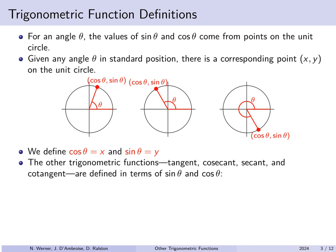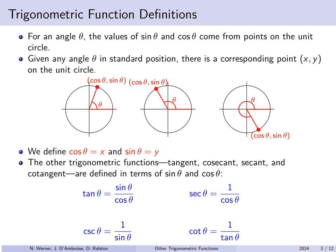Now the other trigonometric functions — tan, cosecant, secant, and cotangent — are defined as they have always been in terms of sine and cosine. So the tangent of theta is sine over cosine, the cosecant is 1 over sine, the secant is 1 over cosine, and the cotangent is 1 over the tangent, which happens to just be cosine divided by sine if you reciprocate the tangent function.